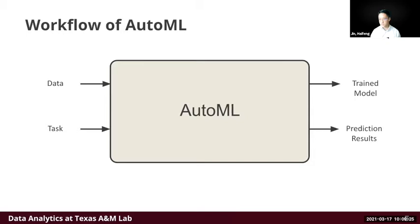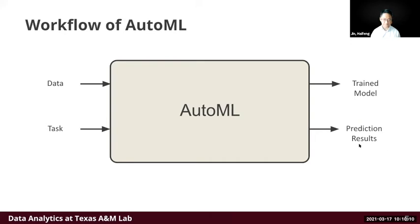From an input-output perspective, AutoML takes inputs like training data, testing data, validation data, and the task type — such as image classification or structured data classification and regression. The outputs of the AutoML module are a trained model you can deploy in a production pipeline, web application, or mobile application for real-time predictions, as well as prediction results for a batch of testing data.